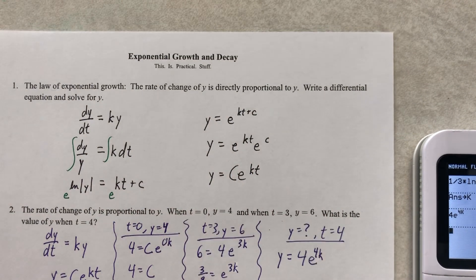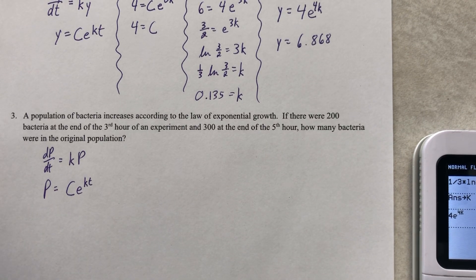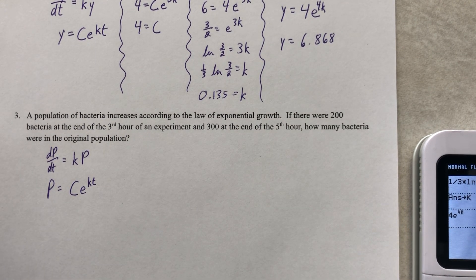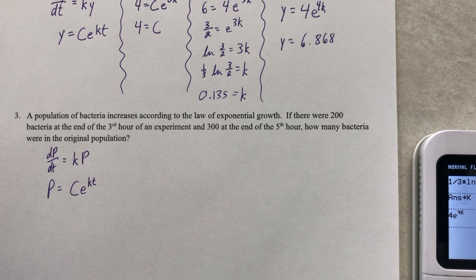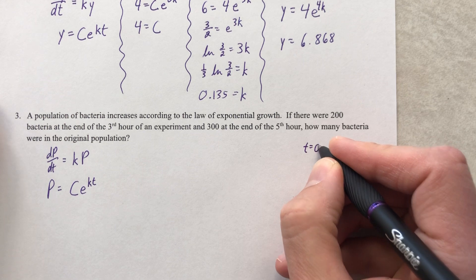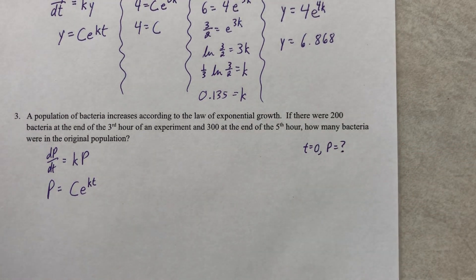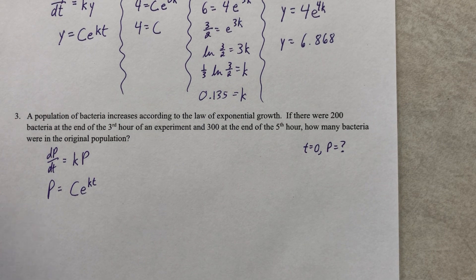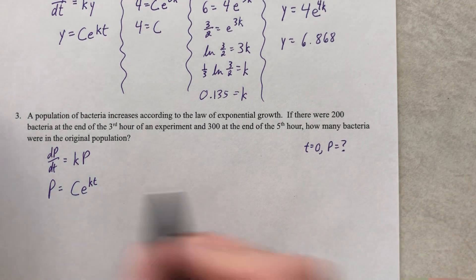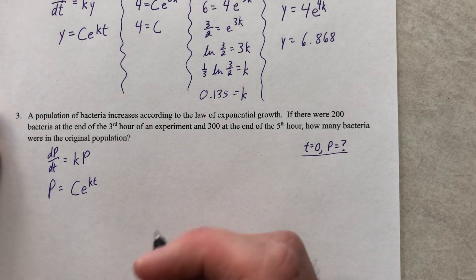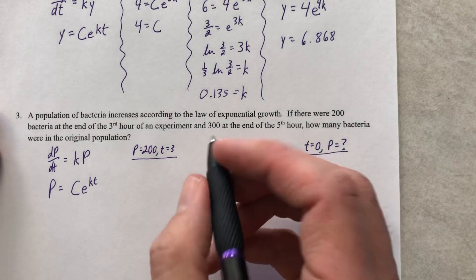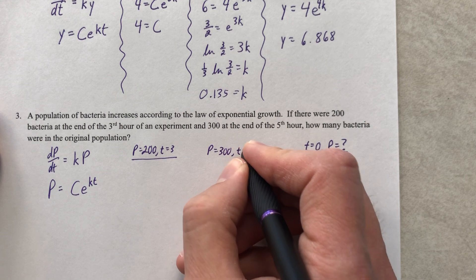If there were 200 bacteria at the end of the third hour of an experiment and 300 at the end of the fifth hour, how many bacteria were in the original population? Let's be really careful about what they're asking. How many bacteria were there in the original population? When t equaled zero, what was the population? You're actually finding C, which makes sense because if I plugged a zero right here, P would equal C. So I'm looking for the population, which is really just the C value at zero.